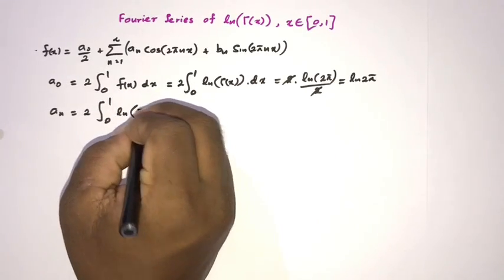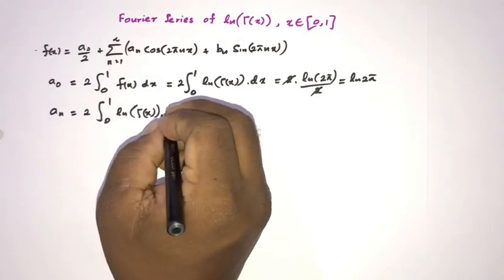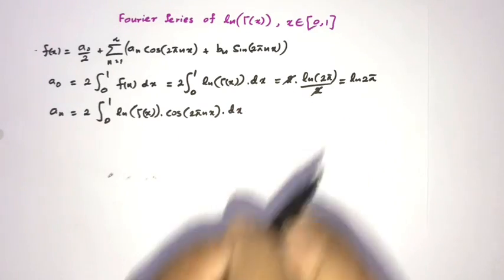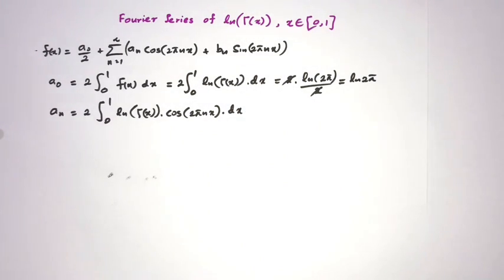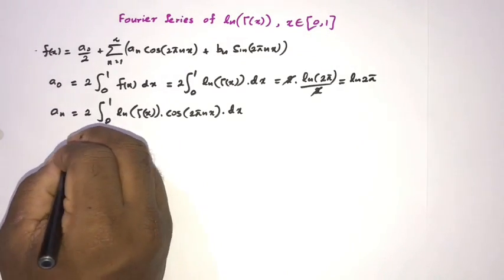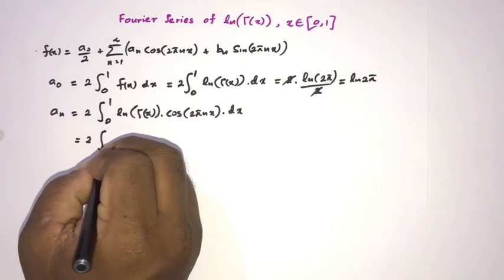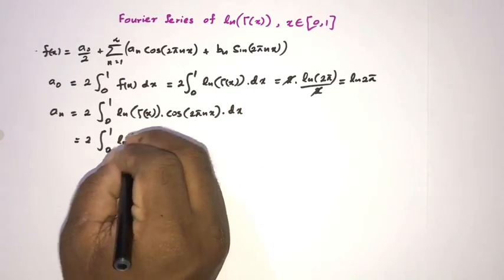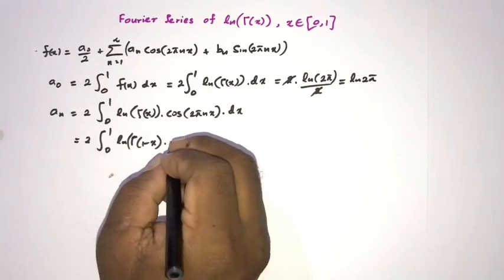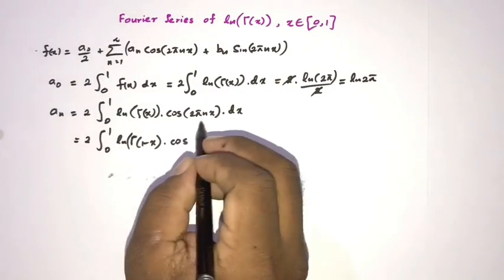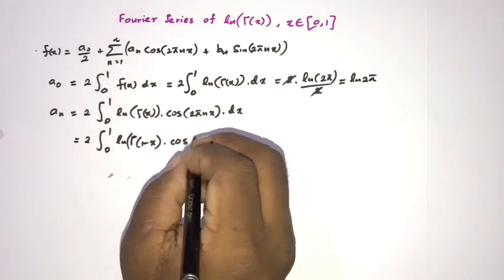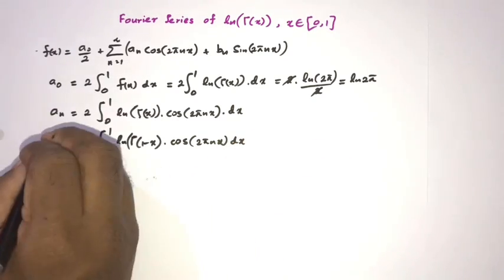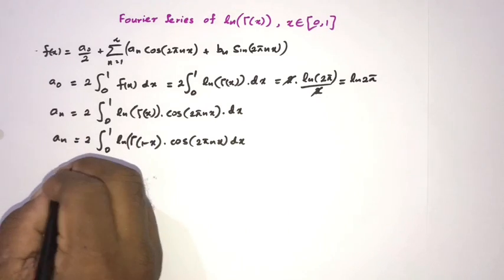Now for aₙ: aₙ = 2∫₀¹ ln(Γ(x))·cos(2πnx) dx. Let's evaluate this integral. We can apply King's property: ∫₀ᵃ f(x) dx = ∫₀ᵃ f(a−x) dx. Applying this, we get aₙ = 2∫₀¹ ln(Γ(1−x))·cos(2πn(1−x)) dx.